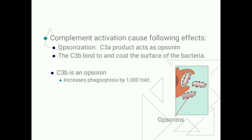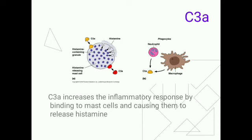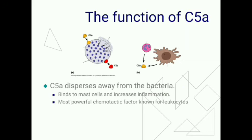To summarize complement activation effects: opsonization is the effect of C3b — C3b binds to and coats the surface of bacteria, increasing phagocytosis by 1000-fold. C3a increases inflammatory response by binding with mast cells and causing them to release histamine. C5a binds to mast cells and increases inflammation; C5a is also the most powerful chemotactic factor. C5b6789, known as the membrane attack complex, causes cytolysis.